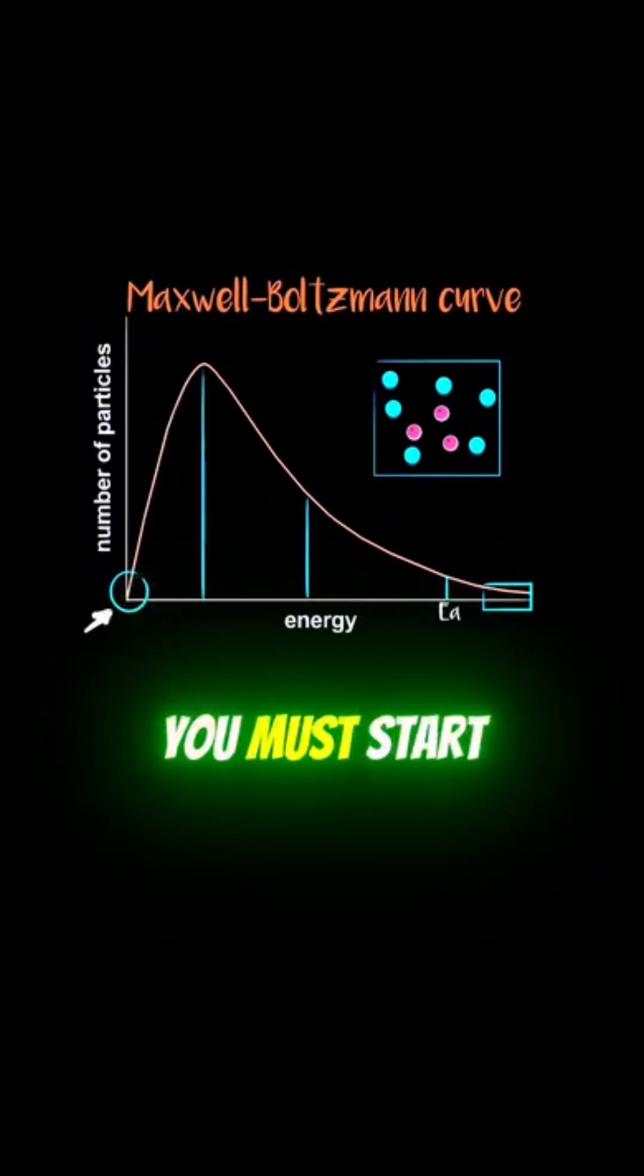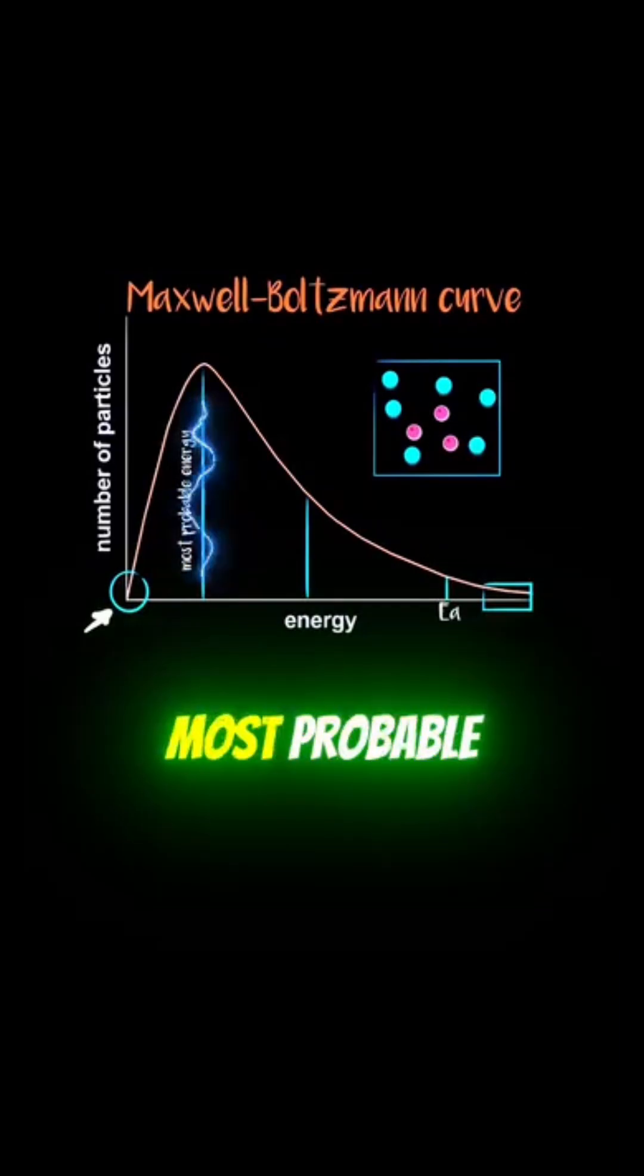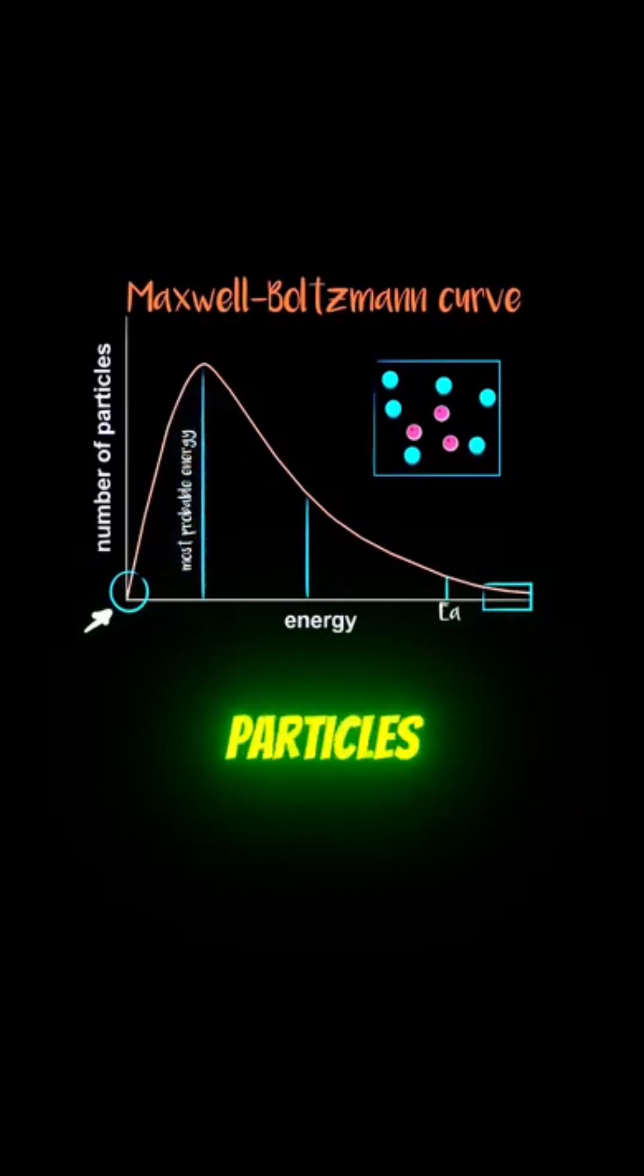First of all, the reason why you must start from the origin is because there are no particles that have zero energy. Second is the peak of the curve which represents the most probable energy of the particles.